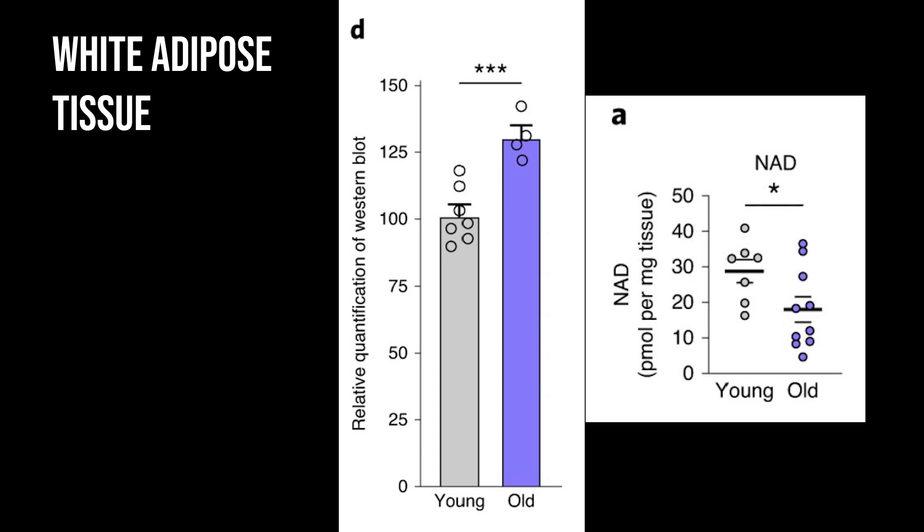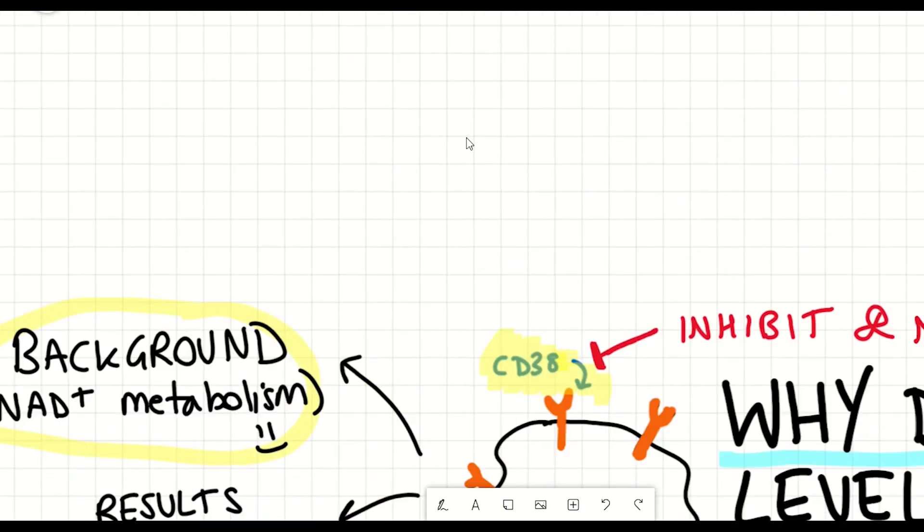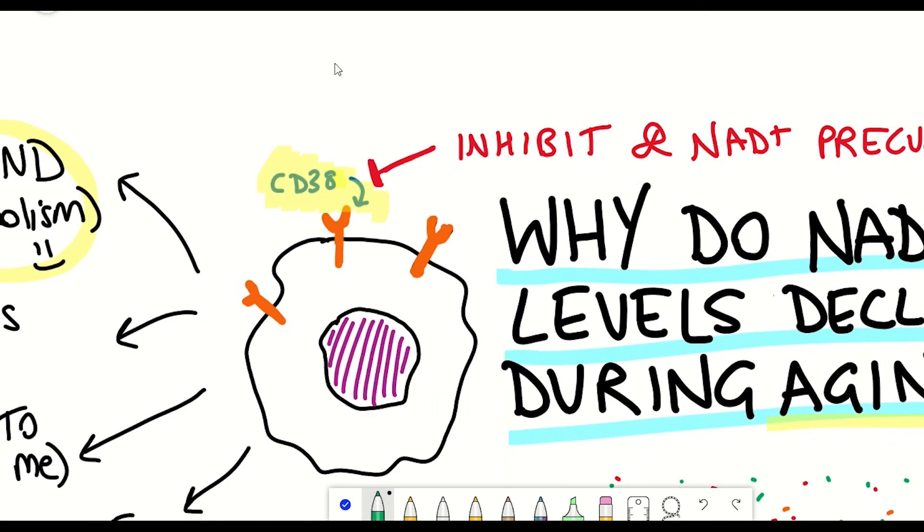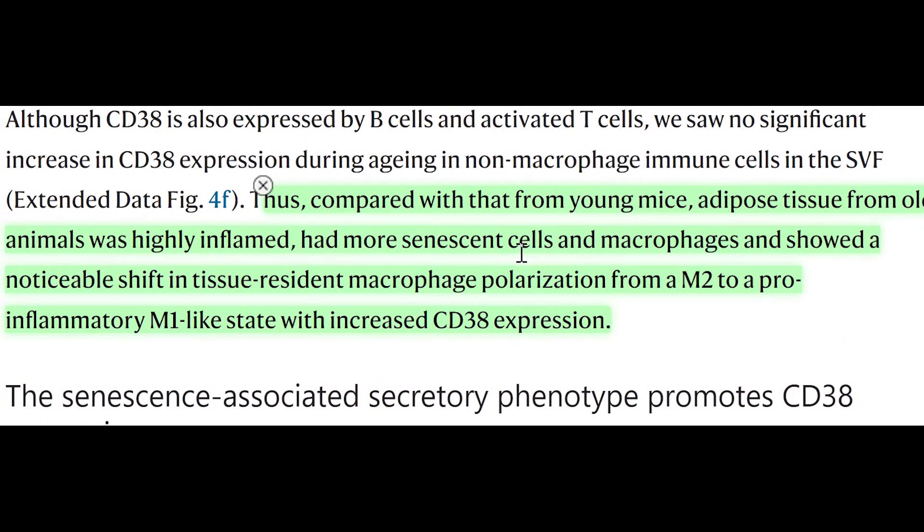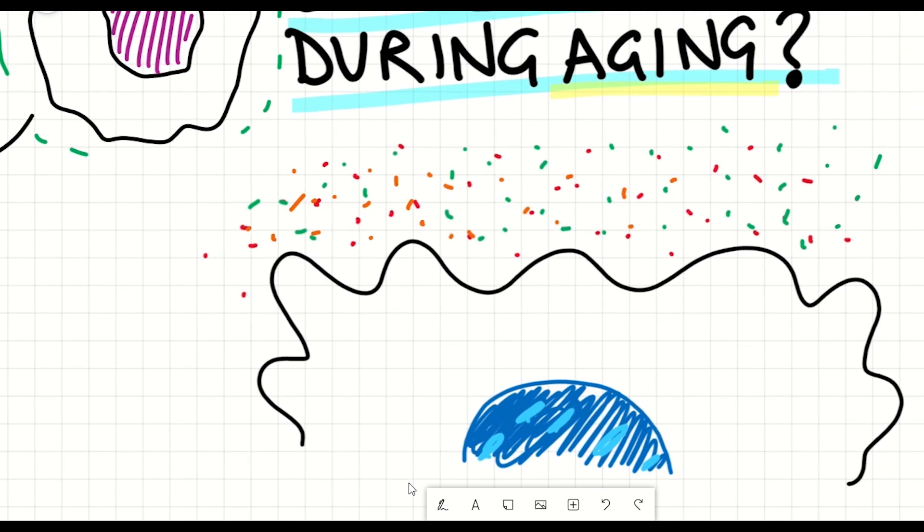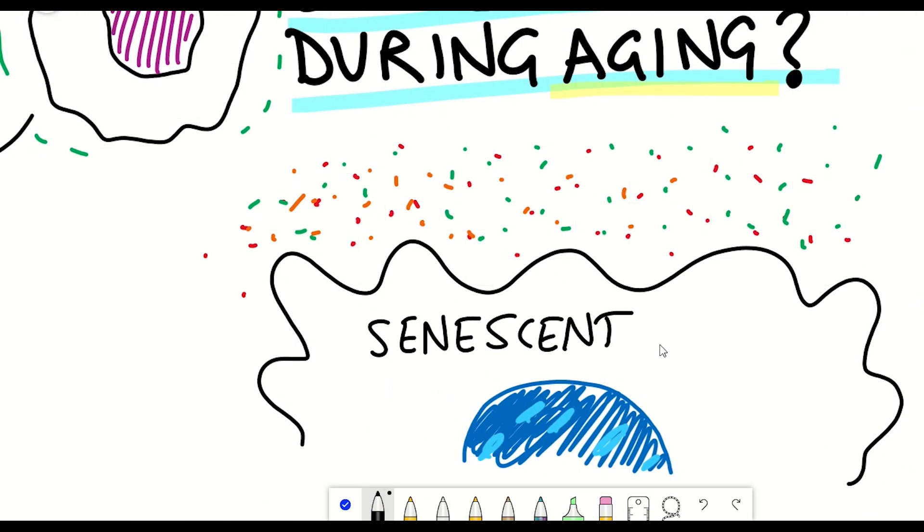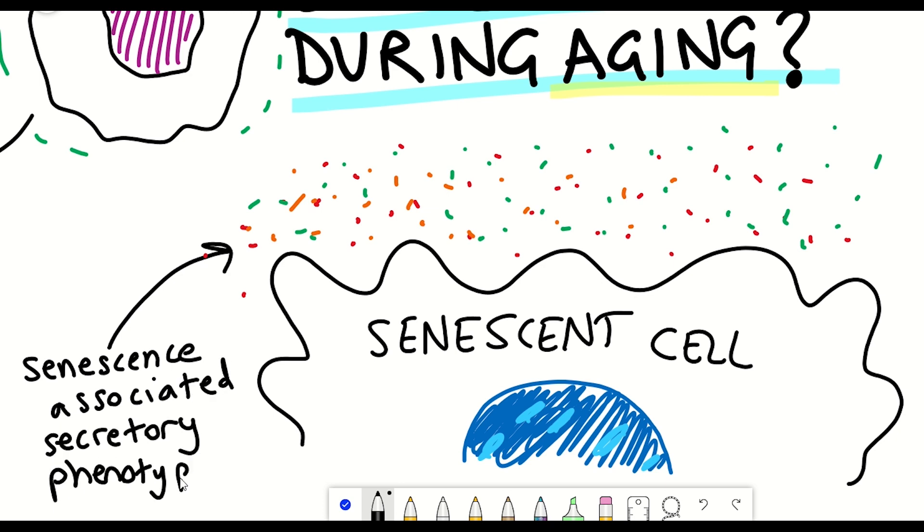These M1-like macrophages accumulated during aging and acute responses to inflammation. Now macrophages are a type of immune cell, so they can be activated in response to inflammatory factors. It's interesting to note that the authors found that senescent cells were also accumulating in the white adipose tissue and the liver during aging. A key feature of senescent cells is the secretion of this senescence-associated secretory phenotype that includes inflammatory factors.